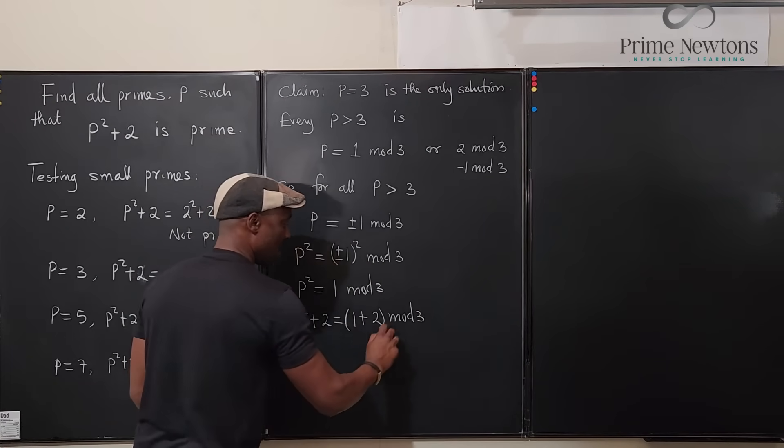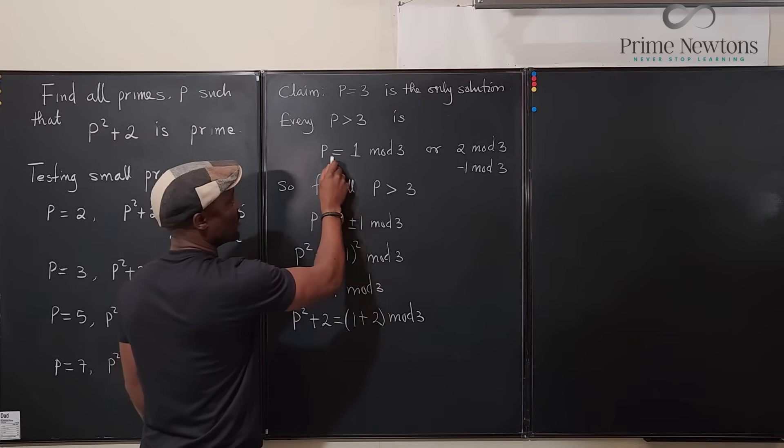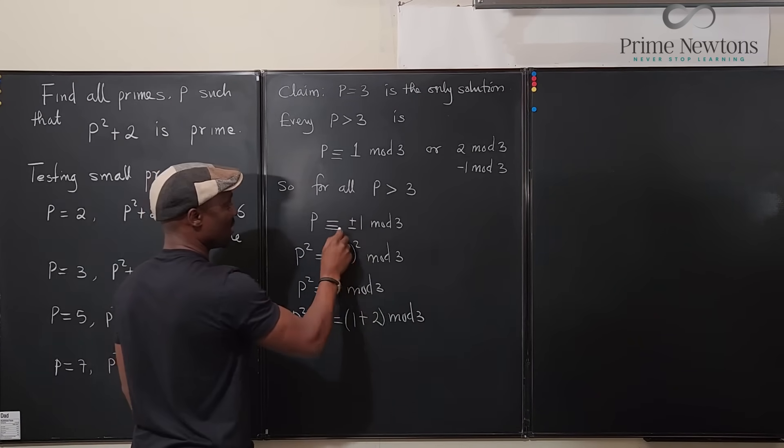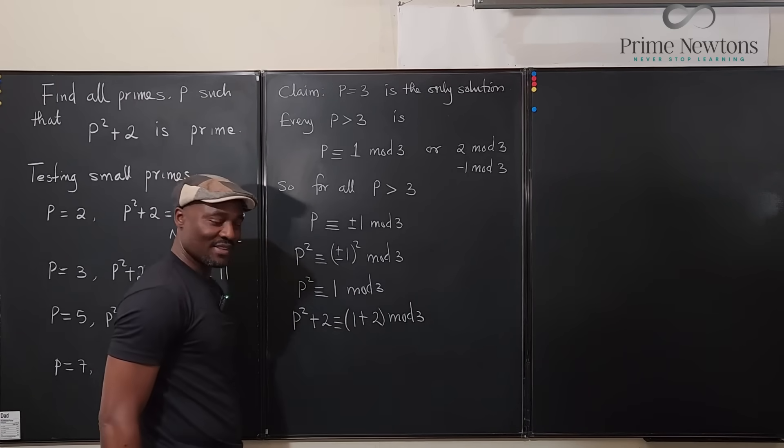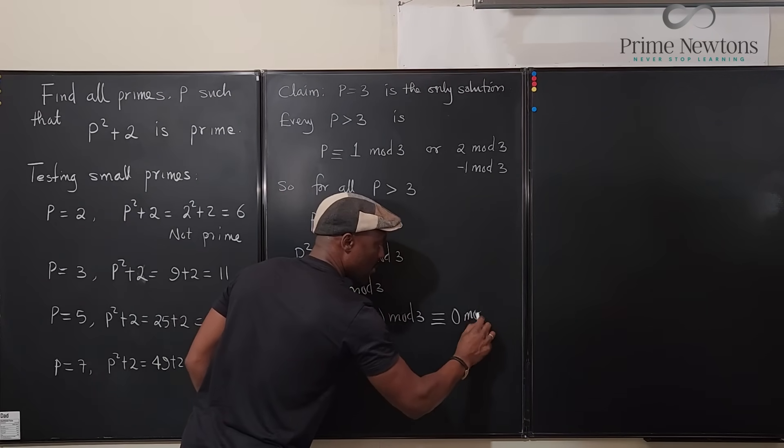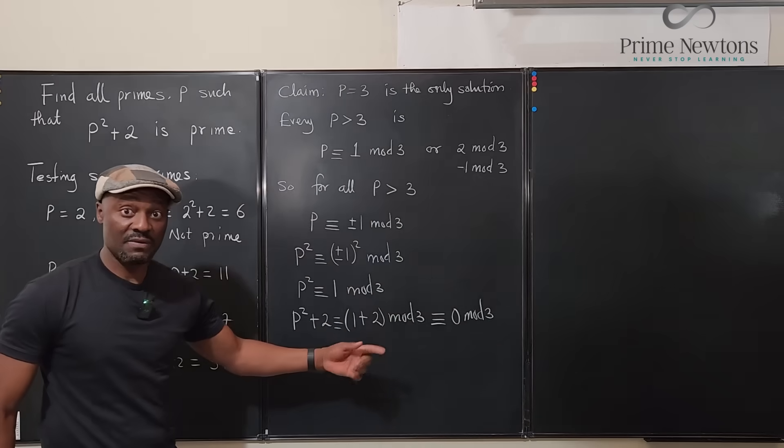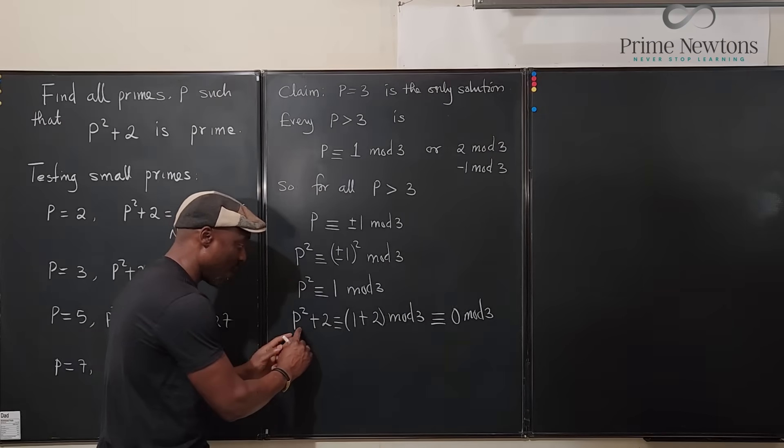P squared plus 2 will be 1 plus 2 mod 3. And what is that? Well, let's write congruent because I think that's going to be a problem. Okay, congruent, okay. And this is congruent to 0 mod 3.